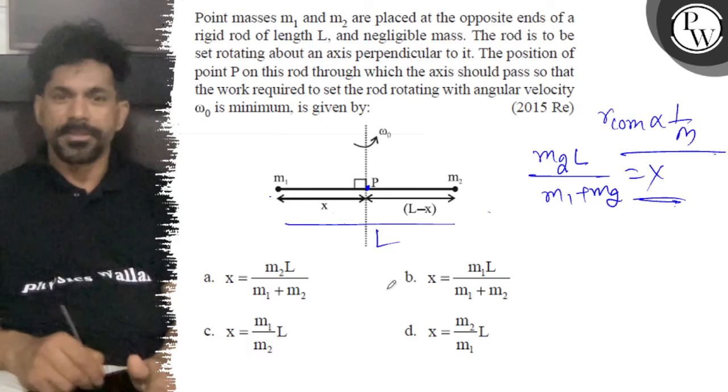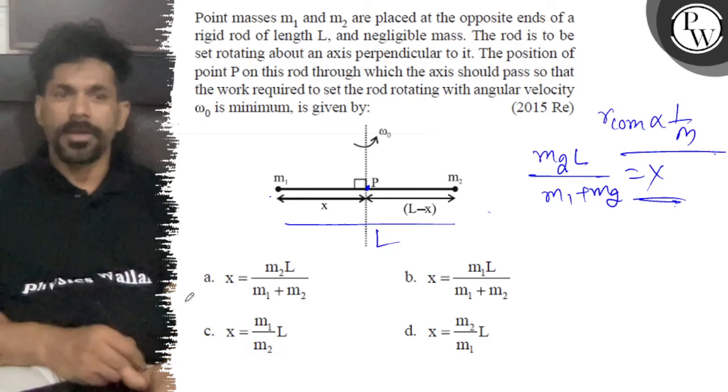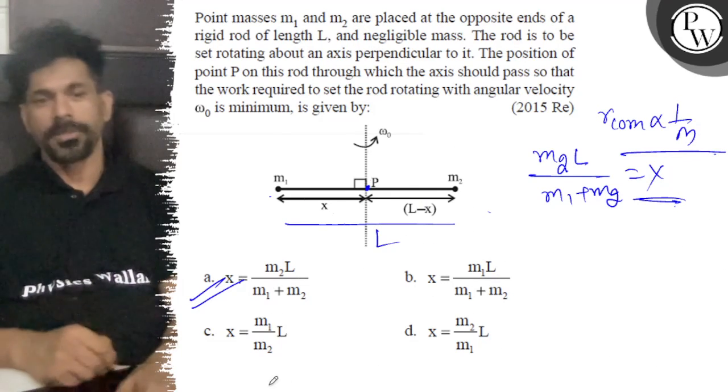So that's it. The right answer is M2 L upon M1 plus M2. Option A is correct. All the best.